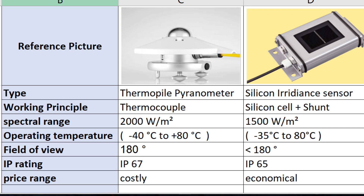Looking at the spectral range — the range to which each sensor is responsive — the CMP3 pyranometer has a higher spectral range at 2000 W/m², whereas the silicon irradiation sensor is around 1500 W/m². Since the spectral range is higher, the field of view for the pyranometer is also obviously greater compared to the silicon-based irradiation sensor.